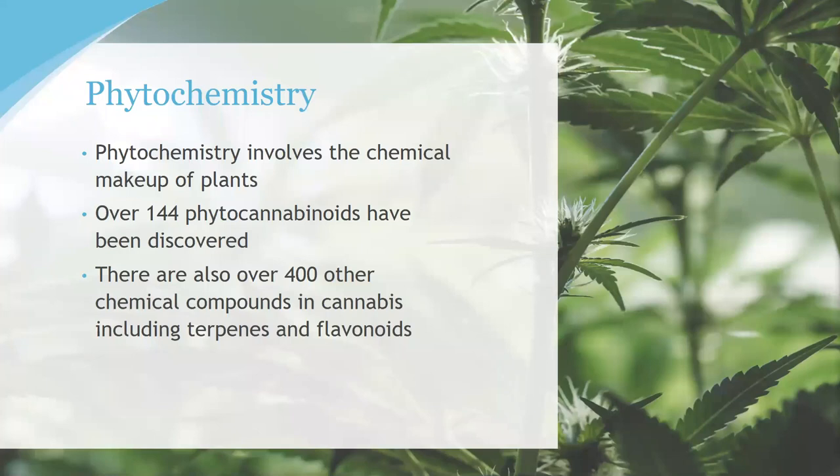The phytochemistry, or plant chemistry of cannabis, includes highly complex arrangements of hydrocarbons, sugars, cannabinoids, terpenes, flavonoids, fatty acids, and other constituent parts. Today we're going to talk about the chemistry of cannabis as it pertains to medicinal use, and the unique combinations of some 144 cannabinoids and more than 400 other constituent parts, all of which combine and contribute to the entourage effect — the result of all those parts working together in the body.